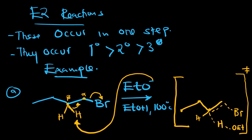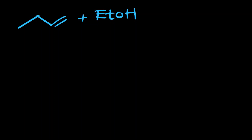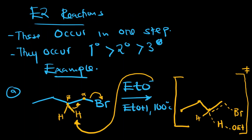At the end of the reaction we form an alkene as a product, and the ethoxide will gain a hydrogen. That is how an E2 reaction occurs: the base gets the acidic beta hydrogen, the electrons collapse between the alpha and beta carbon, and the leaving group is kicked out. Never forget to write the transition state — it carries marks and is very important.